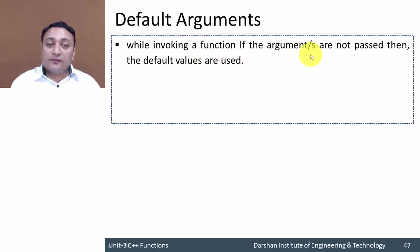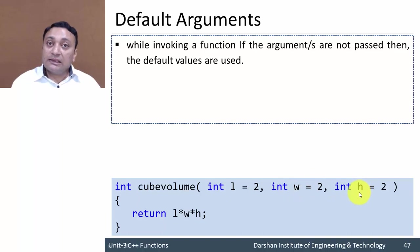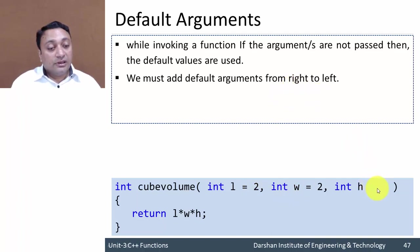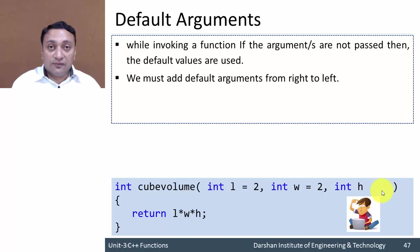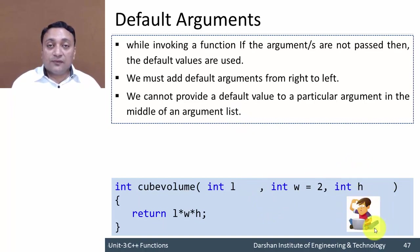Some important facts about default arguments: while invoking a function, if arguments are not given, default values will be used. We must add default arguments from right to left — if you want to assign defaults, their order should be right to left. If the rightmost argument has no default value assigned, that declaration is invalid. You cannot provide a default value to a particular argument in the middle of the argument list, as that creates a confusion state for the compiler.